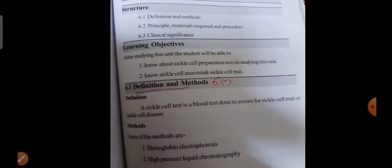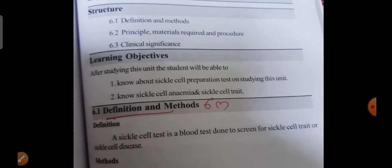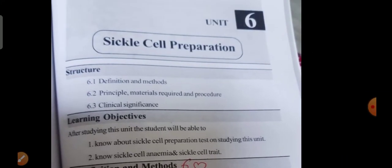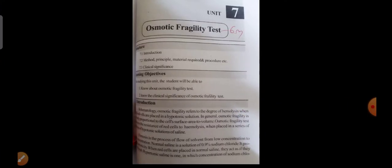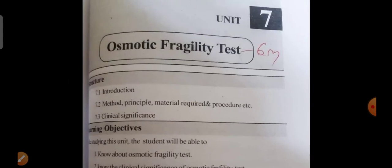Absolute eosinophil count is also a six-mark question from Unit 5. Sickle cell preparation — methods and techniques of sickle cell preparation — is a six-mark question from Unit 6 in pathology. Osmotic fragility test is a six-mark question from Unit 7 for the MLT second year students in pathology.